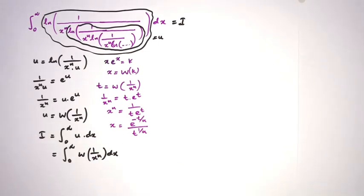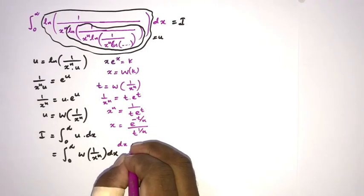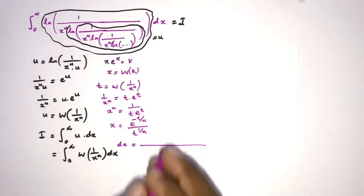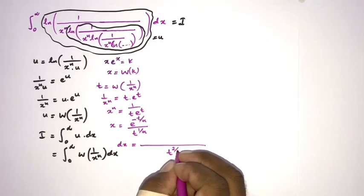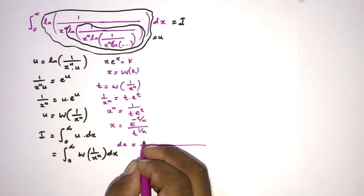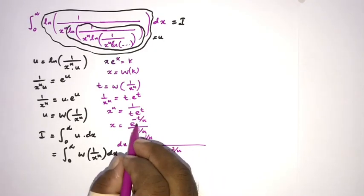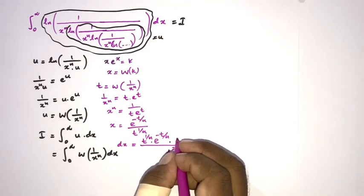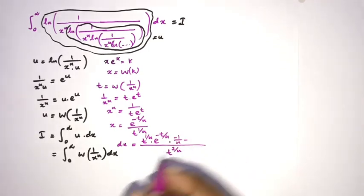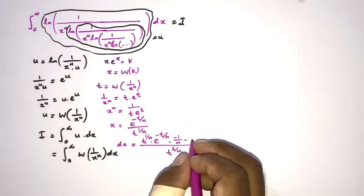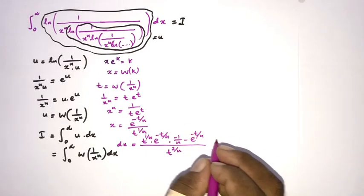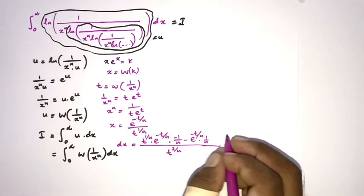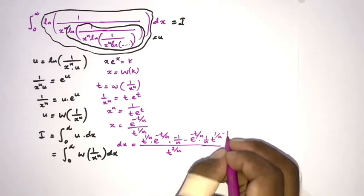Then we differentiate. Applying the quotient rule with denominator t to the 2 over n: the numerator gives t to the 1 over n times the derivative of e to the minus t over n, which is e to the minus t over n times minus 1 over n, minus e to the minus t over n times the derivative of t to the 1 over n, which is 1 over n times t to the 1 over n minus 1.